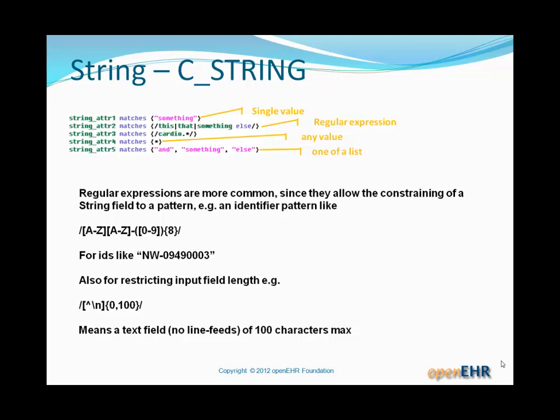Now regular expressions are probably the most common useful constraints because they allow the constraining of a string field to a pattern, such as an identifier pattern. There's a simple regex there. For those of you who don't know what regular expressions are, you probably don't need to know because undoubtedly you'll have some technical person who does this kind of work for you. If you're one of the people who has to get dirty and handle regular expressions, you'll understand what you're looking at. So that pattern there enables you to force, for example, an identifier starting with two letters, a dash, and then eight digits.